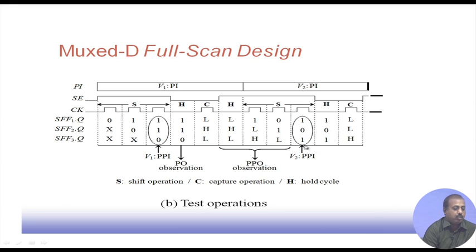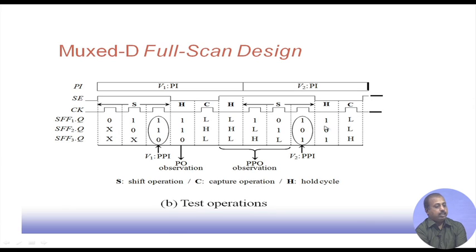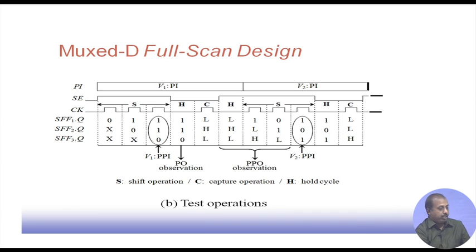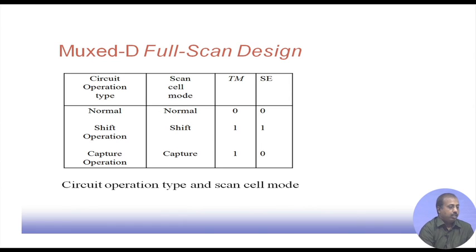Once the pseudo primary input part of v2 is loaded, a hold cycle is given, then a capture pulse: the combinational logic evaluates and the PPO values get captured onto the flip flops. For the next pattern v3, the current response will be shifted out to the scan-out line, and the next pseudo primary input part gets shifted into the flip flops. This is how the testing operation takes place.